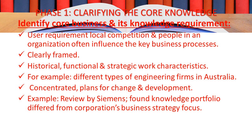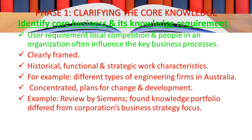We will now discuss the subheadings of the first phase — clarifying the core knowledge scope. The first subheading is: identify core business and its knowledge requirements. Each organization is unique, and various factors influence how it operates — user requirements, local competition, and the people in the organization often influence how key business processes evolve. Identifying these business priorities and directions enables the core knowledge requirement to be clearly framed. Each organization relies on different compositions of core knowledge, reflecting its historical, functional, and strategic work characteristics.